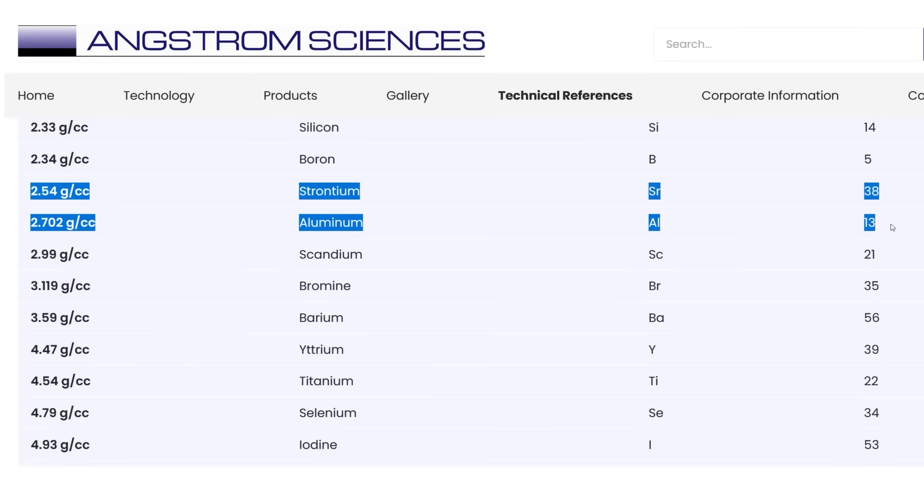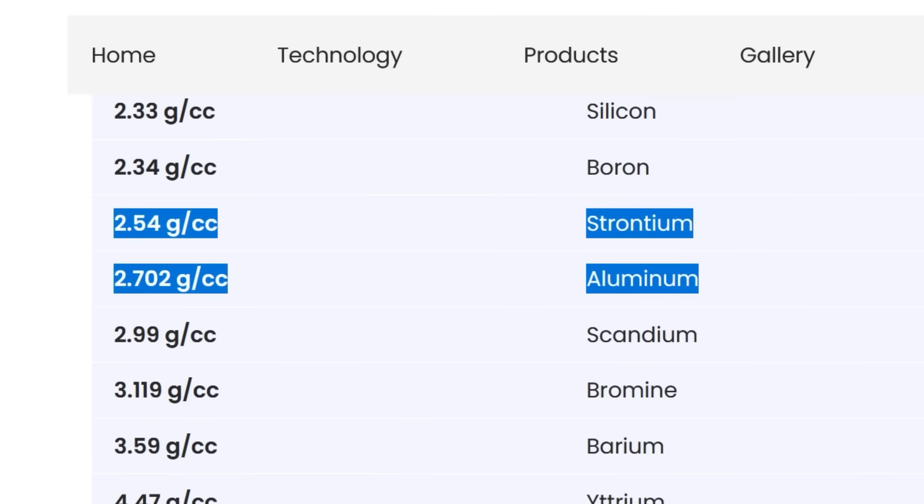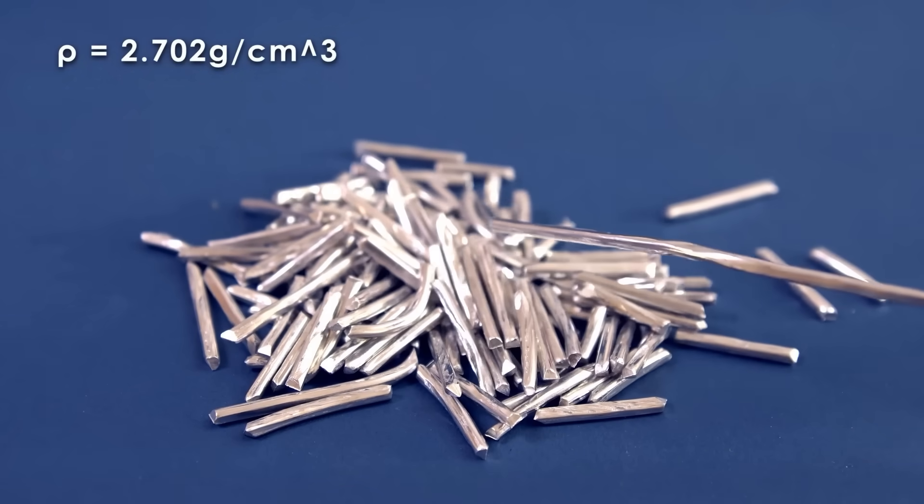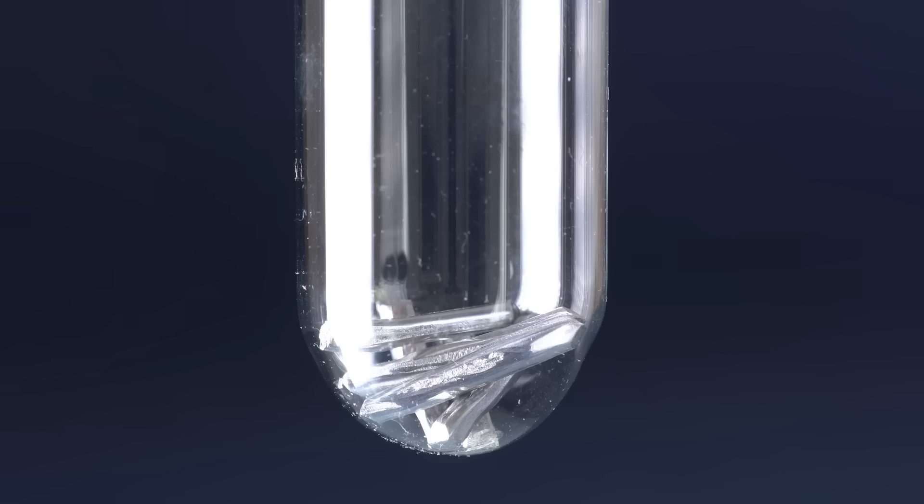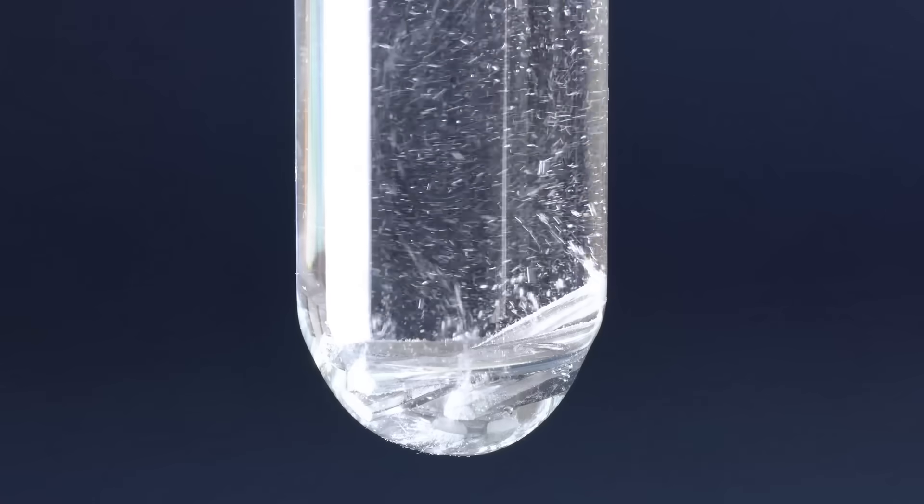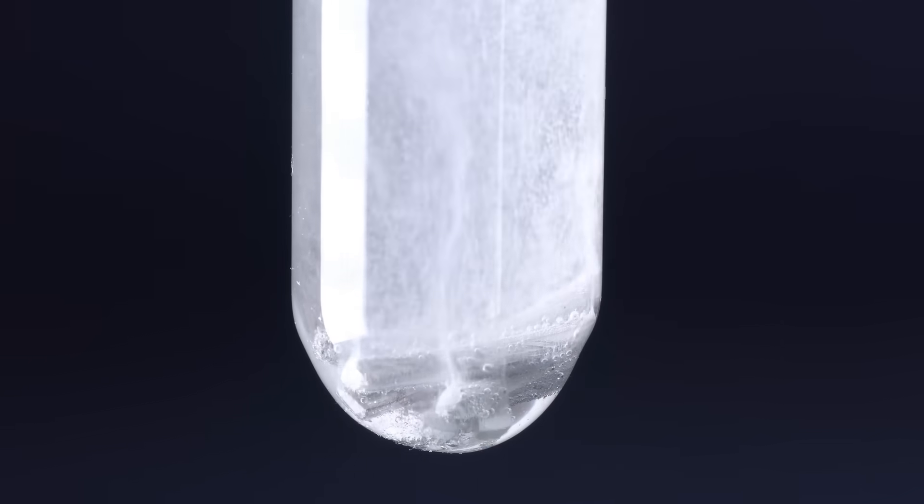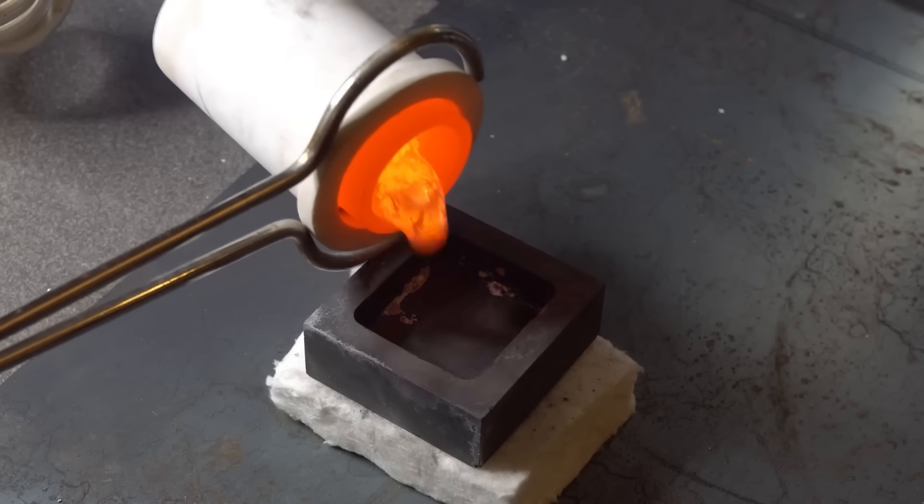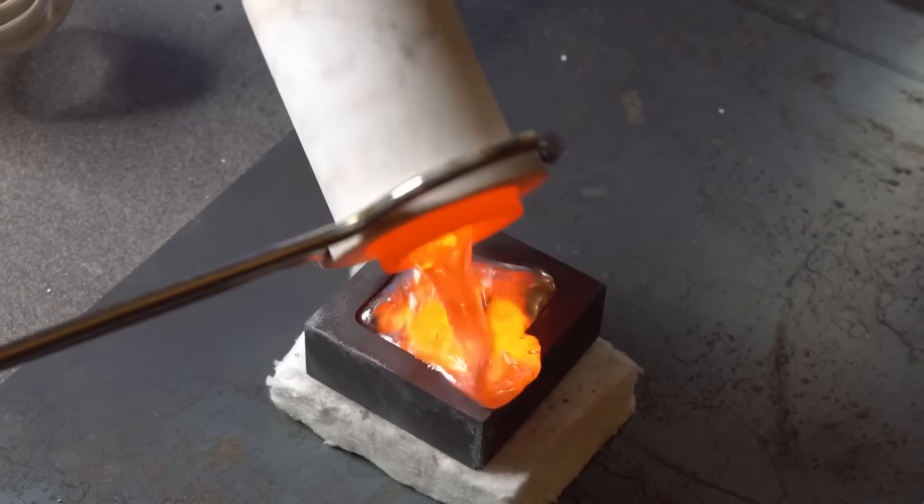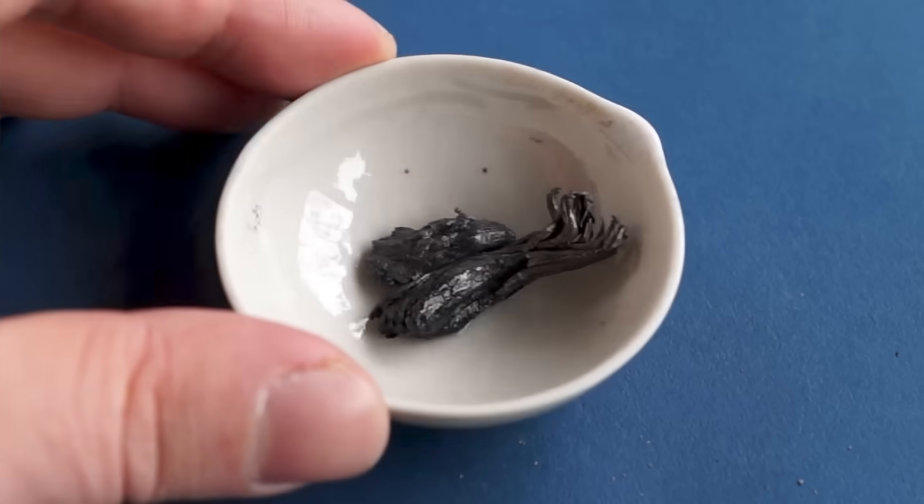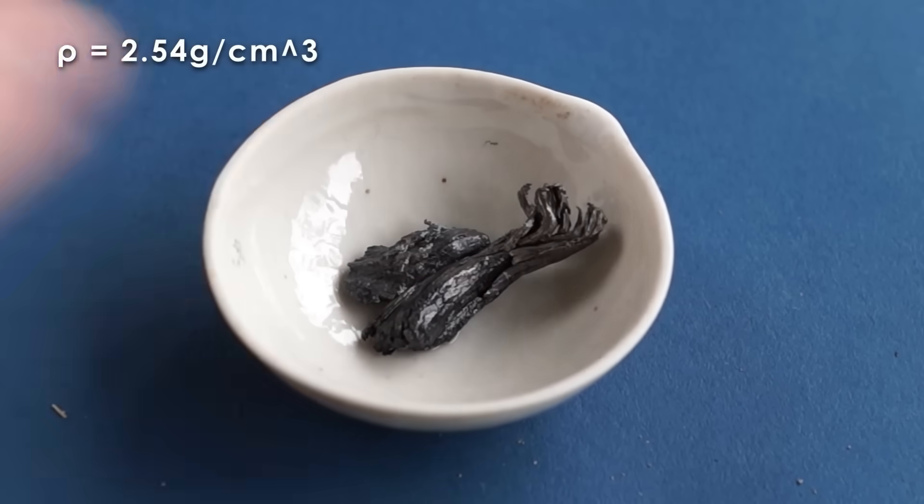This metal also reacts quite vigorously with sulfuric acid, forming manganese sulfate and hydrogen. In comparison, tin, which is only 1 gram per cubic centimeter lighter than manganese, already has slightly different properties. For example, it melts at a temperature of just 231 degrees Celsius. It indeed only reacts with sulfuric acid when heated.